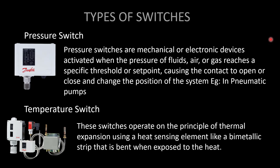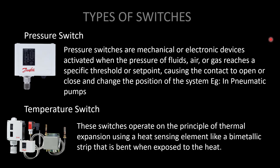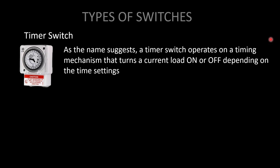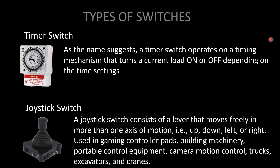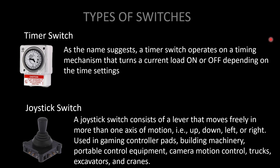A temperature switch operates on the principle of thermal expansion using a bimetallic strip or combination of two metals to detect temperature. When exposed to heat, it bends and activates the mechanism. A timer switch is widely used in irrigation systems — a timer is set so the switch turns on and off automatically. A joystick switch consists of a lever that moves freely in more than one axis — up, down, left, or right — and is used in gaming control pads, building machinery, excavators, cranes, and camera motion control.